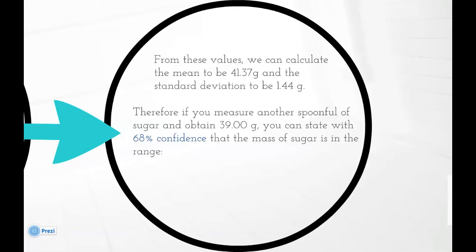Therefore, if you measure another spoonful of sugar and obtain 39 grams, you can state with 68% confidence that the mass of sugar is in the range 39 plus or minus 1.44 grams. Where are we getting this value of 68% confidence from? That's what we're going to discuss next.